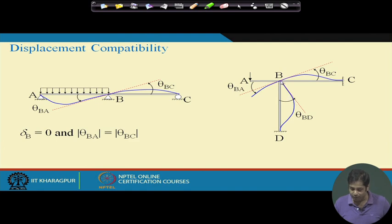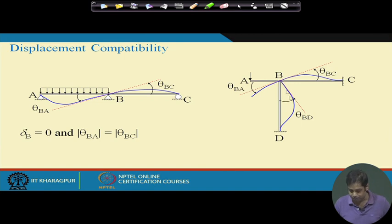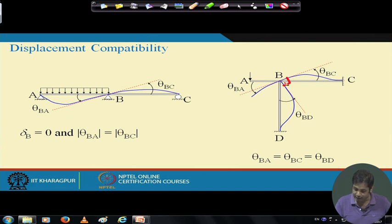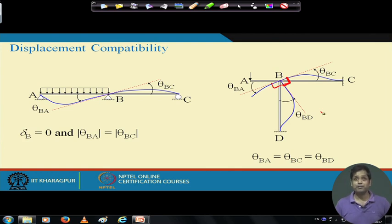As another example: at a rigid joint B connecting members AB, BC, and BD, compatibility conditions say that since it is a rigid joint — originally at 90 degrees — it remains at 90 degrees after deformation. There is no rotation of the joint itself. Therefore, the angles between all members at B remain 90 degrees — meaning the slopes θ_BA, θ_BC, and θ_BD must all be consistent with this rigid joint condition.